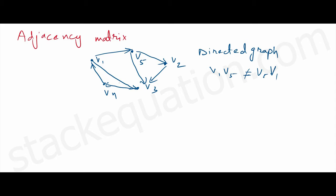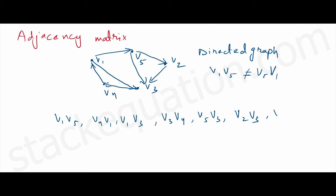Now, what is an adjacency matrix? If we name all the edges that exist in this graph, they are: V1→V5, V4→V1, V1→V3, V3→V4, V5→V3, V2→V3, and V5→V2. That gives us seven edges in total.